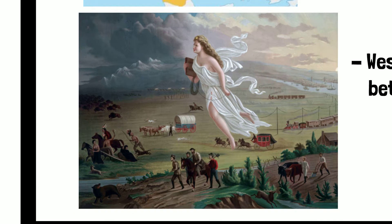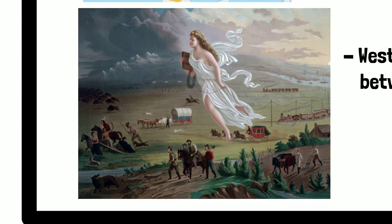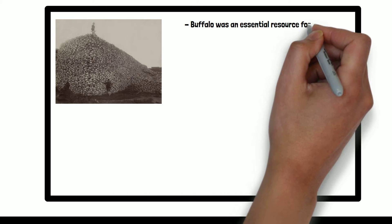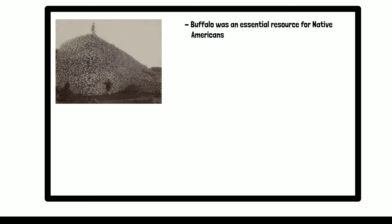A central aspect of the Native American experience during this time was the depletion of the buffalo. Buffalo were an essential resource for the Plains Indians. American settlers constructed fences and property lines, often defined by barbed wire, that limited migration patterns.